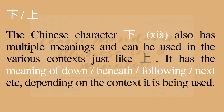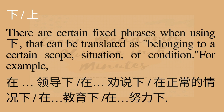The Chinese character 下 also has multiple meanings and can be used in various contexts, just like 上. It has the meaning of down, beneath, following, next, etc., depending on the context. There are certain fixed phrases when using 下, which can be translated as belonging to a certain scope, situation, or condition — for example: 领导下, 劝说下, 正常的情况下, 教育下, 努力下.